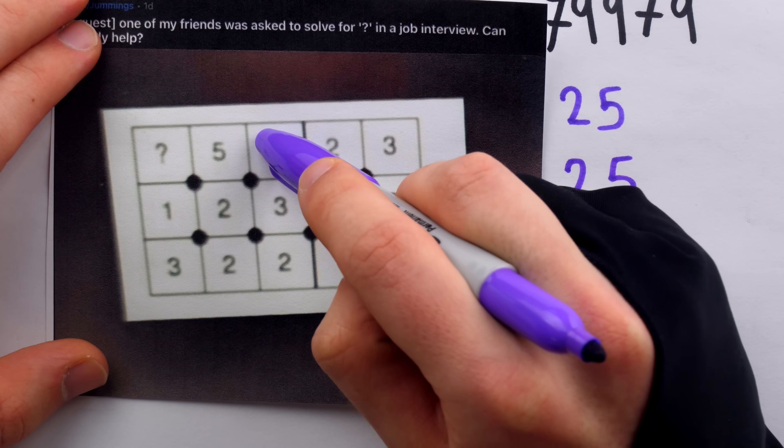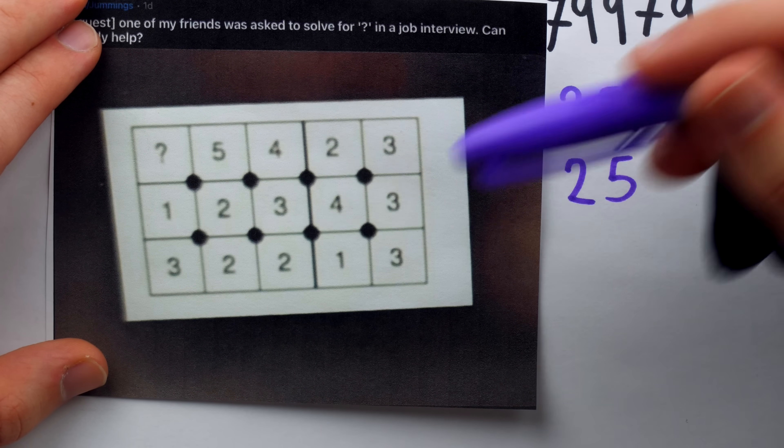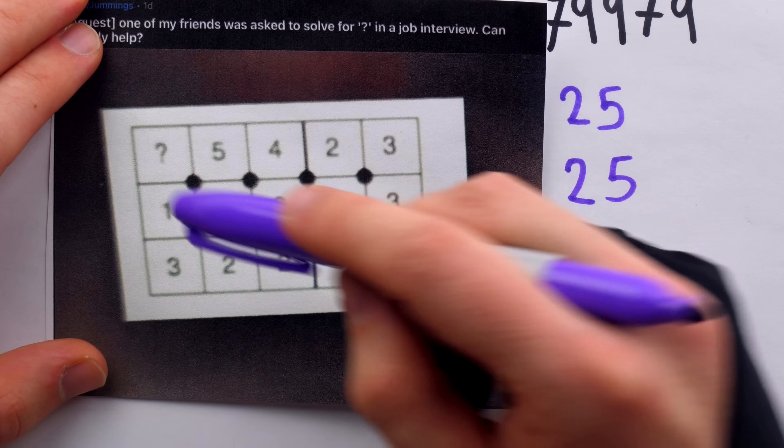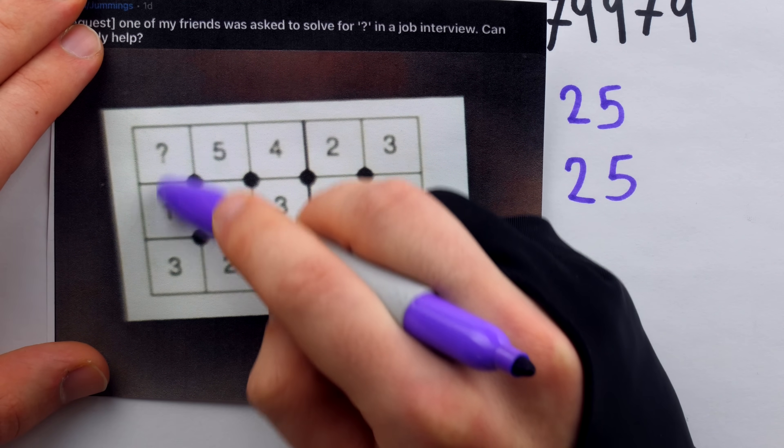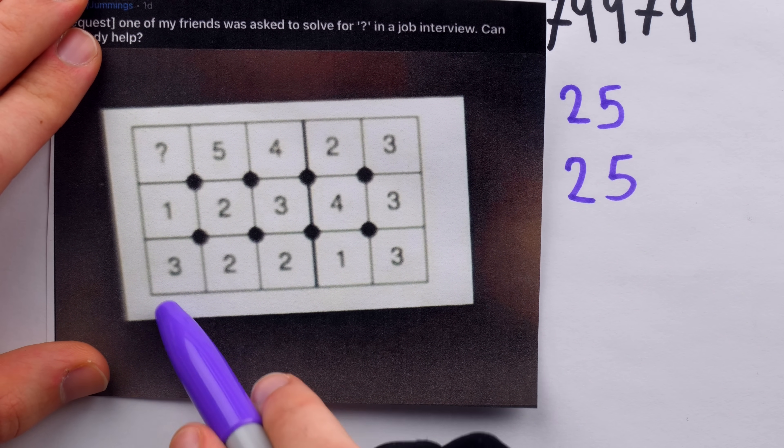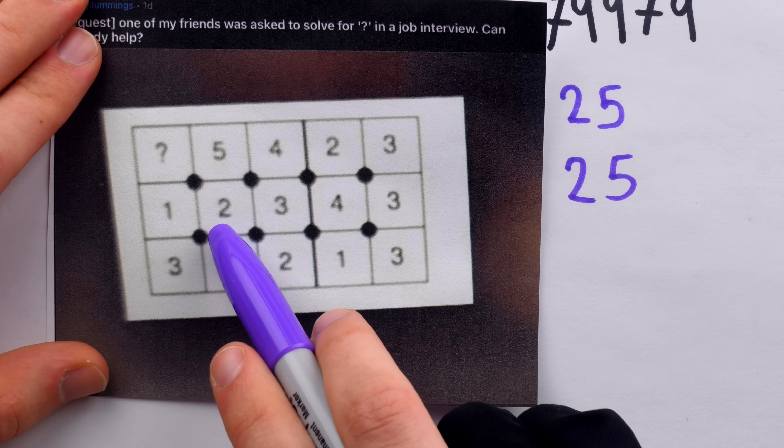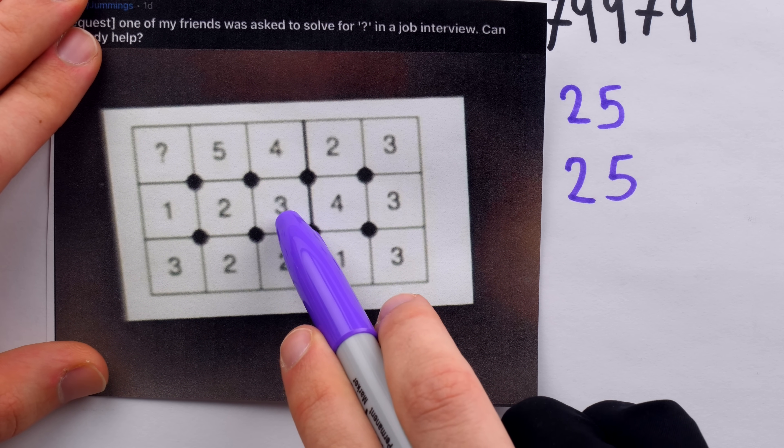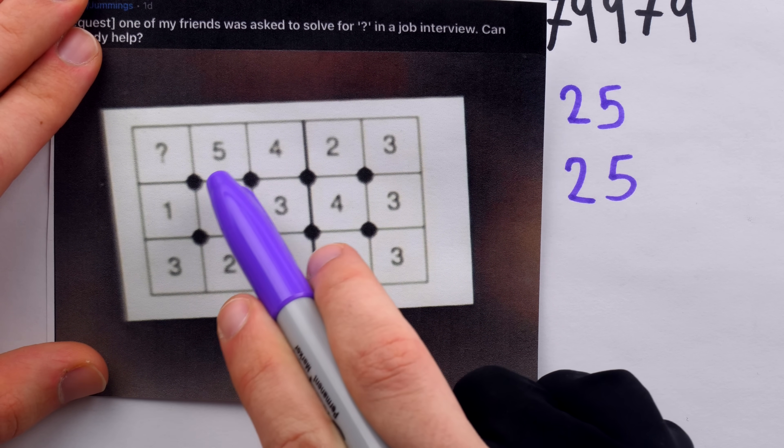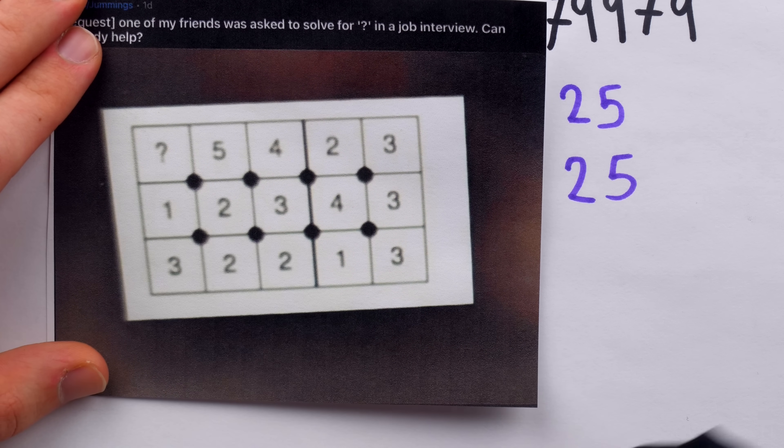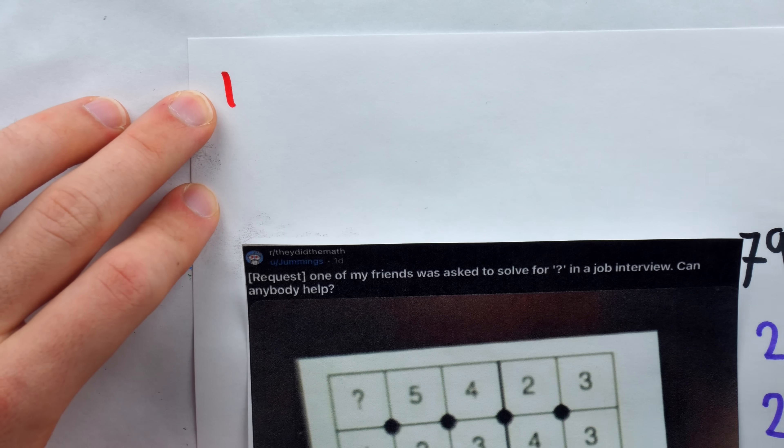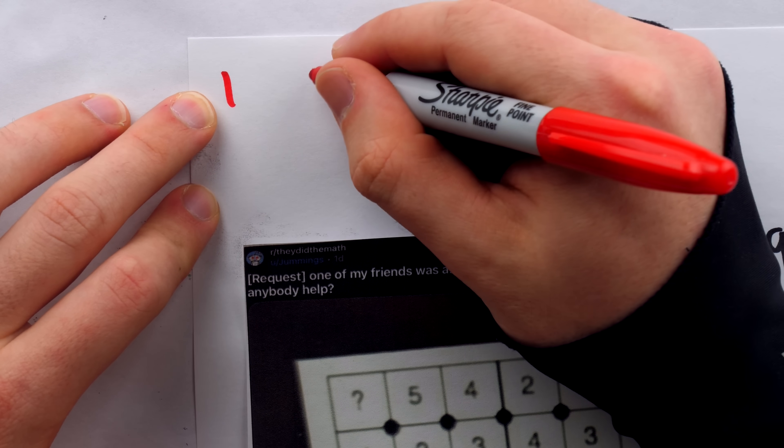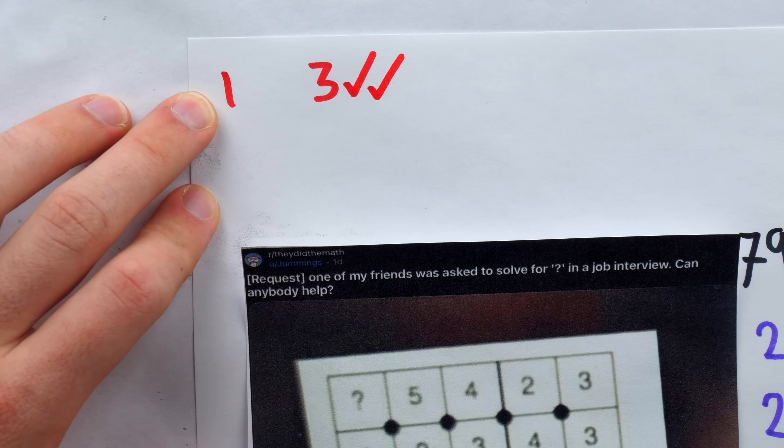So then surely the sum of the numbers in this last 3 by 3 square will have to be 25. This is such a definitive and fairly simple pattern. Surely, the sum of the numbers in the last 3 by 3 square is 25 as well. 3 plus 2 plus 2 is 7, 1 plus 2 plus 3 is 6, that brings us to 13, plus 4 is 17, plus 5 is 22, so the question mark must be 3 to bring the total again to 25. So just by looking at the rows we had one really simple explanation of why the answer might be 1, now we have two possible reasons the answer might be 3.